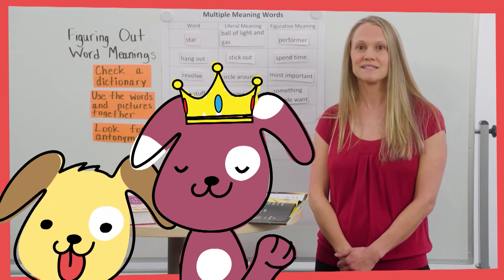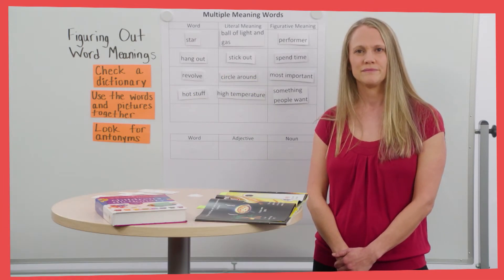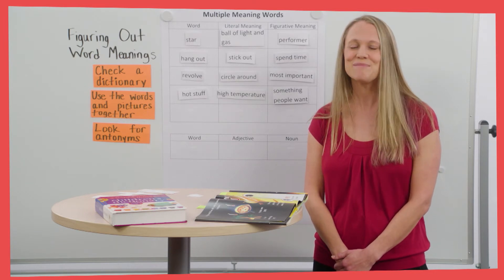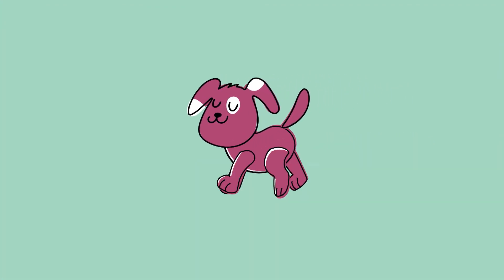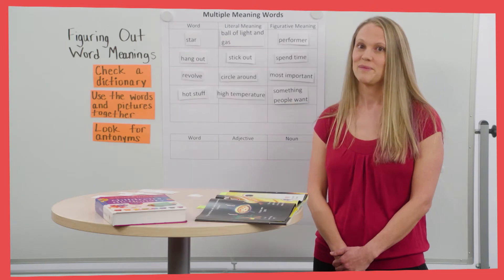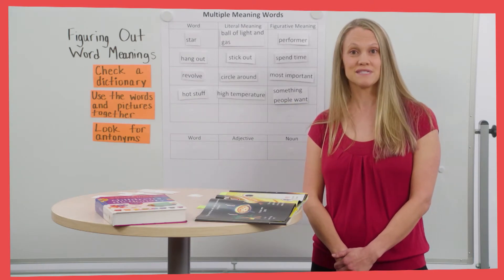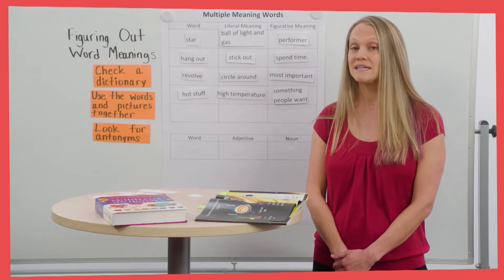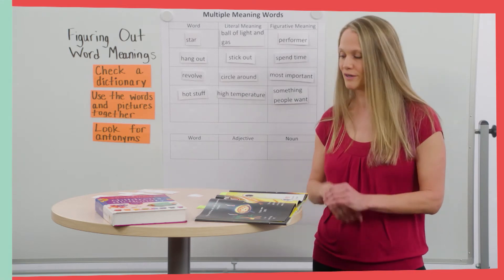How might Spot act since he thinks he's hot stuff? He might walk like this. Now it's your turn, word detectives. Read this page with me and as we read, try to find a multiple-meaning word.